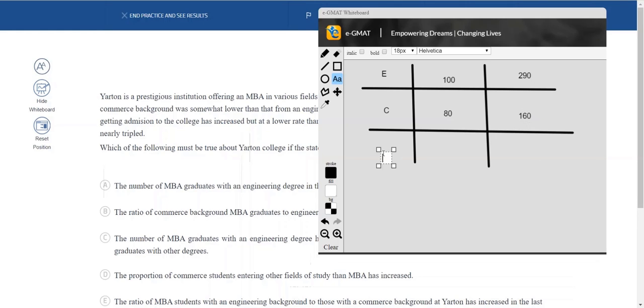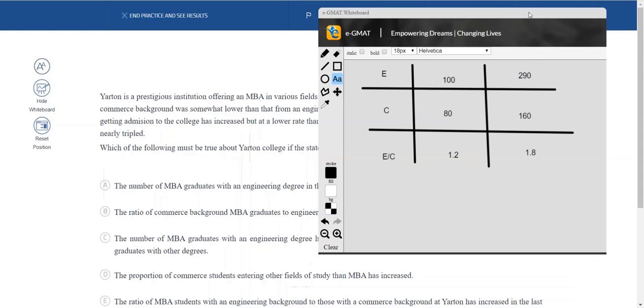So now before I move on to looking at the option choices, what can I analyze from the data I have? Proportions. I can see E by C or C by E, so let's take engineering by commerce and see what we get. So this is 100 by 80, that's typically 1.2, and this one is 290 by 160, that's almost 1.8. So before I even look at the option choices, I already have some analysis here. I know that the ratio of engineering students to commerce students at Yarton has increased from 5 years ago till today. So I already have that ready now.